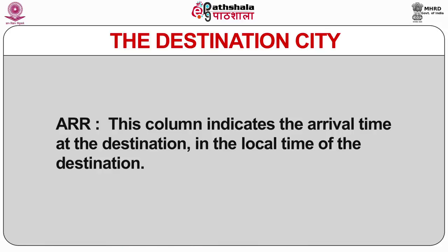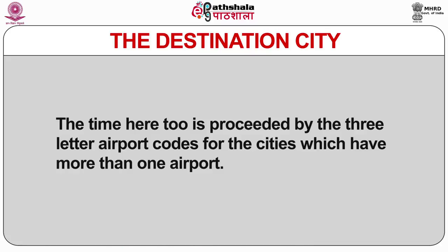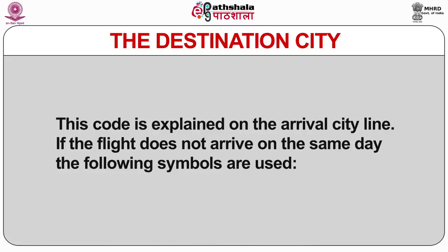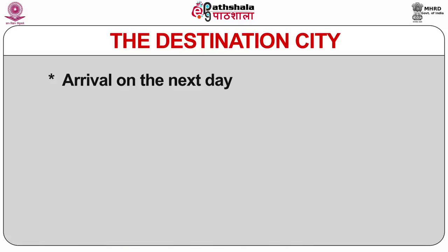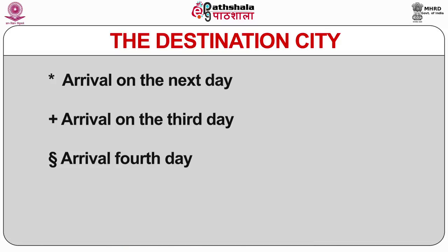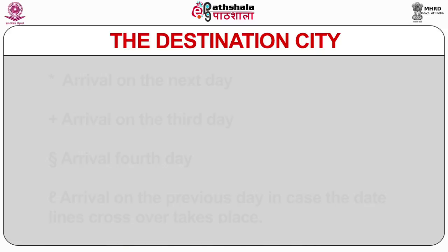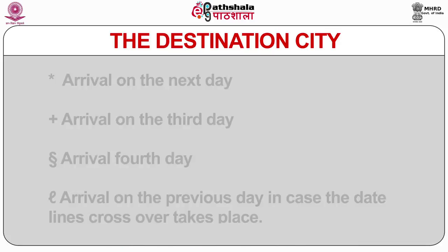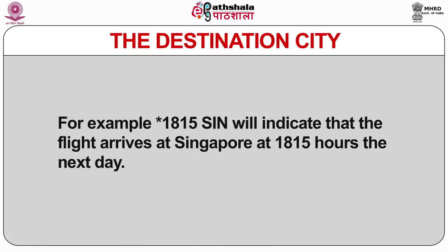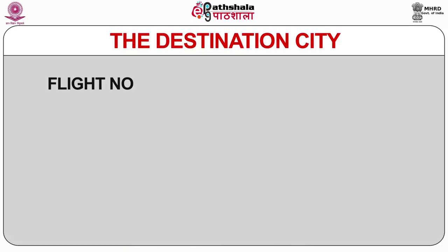The Arrival column indicates arrival time at the destination in local time. For cities with more than one airport, the time is preceded by the three-letter airport code. If the flight does not arrive on the same day, symbols are used: a star (*) means arrival the next day, plus (+) means arrival on the third day, the dollar sign ($) means arrival on the fourth day, and another sign indicates arrival on the previous day. For example, *1815 SIN indicates arrival at Singapore at 18:15 on the next day.